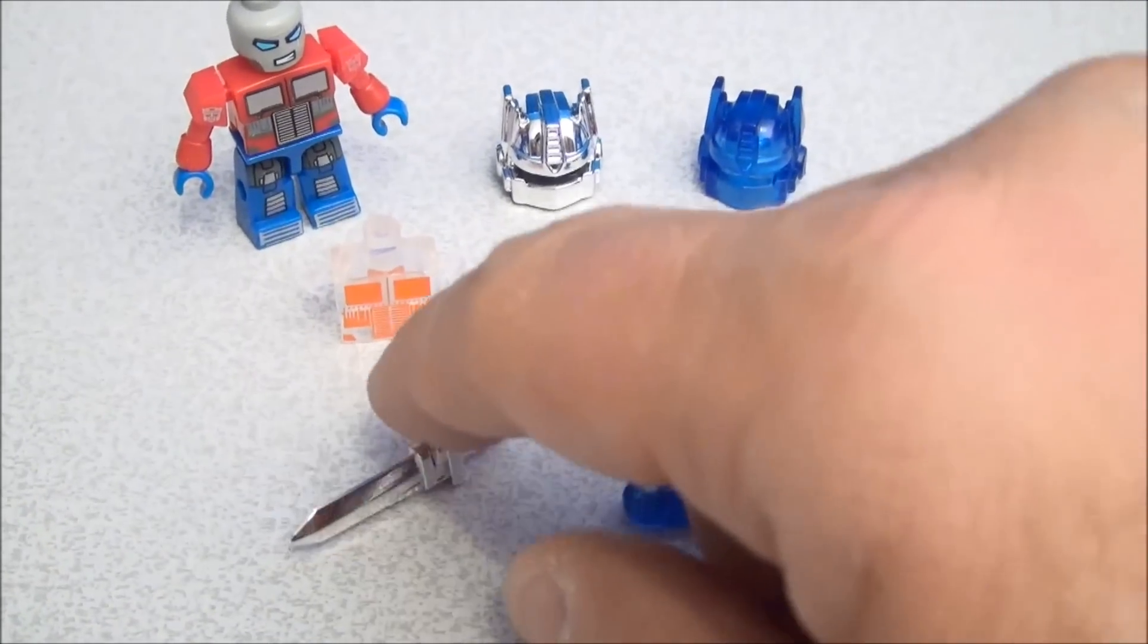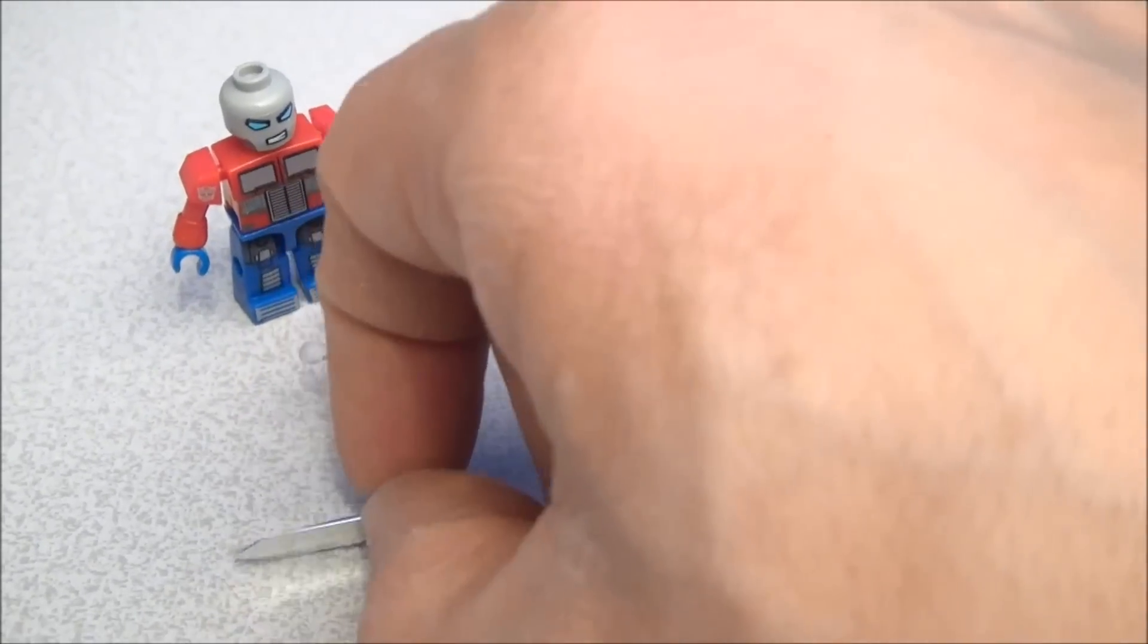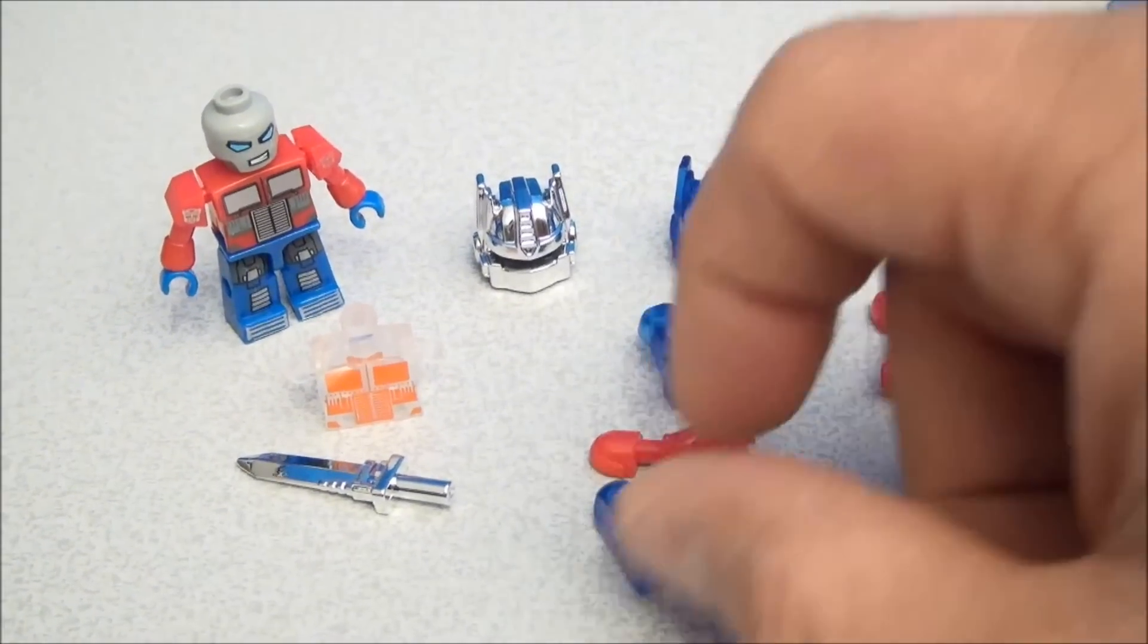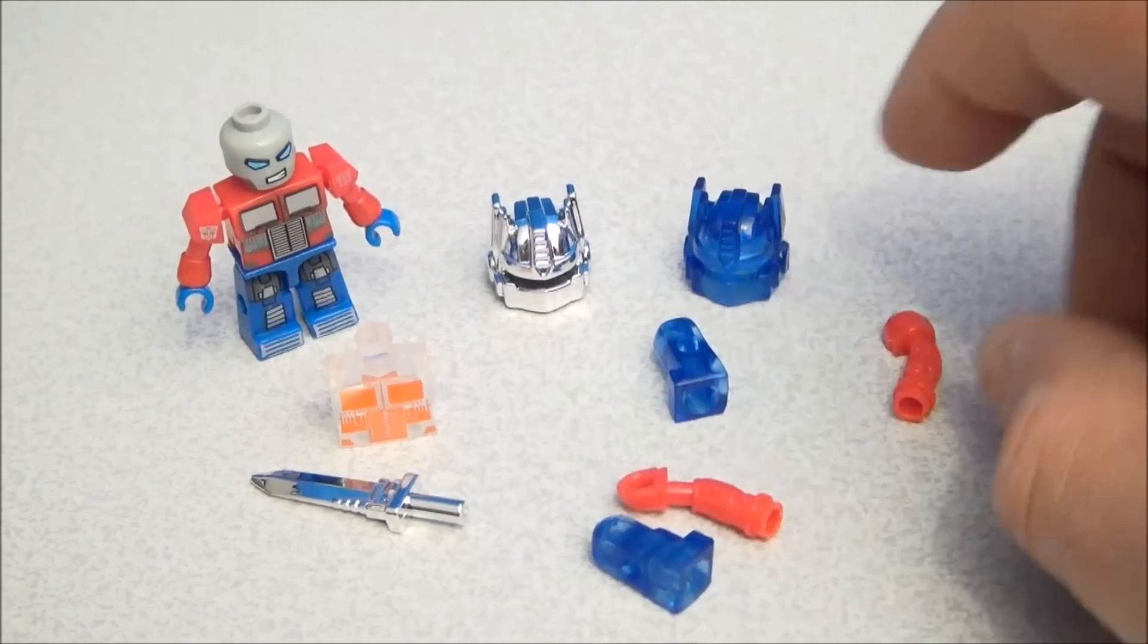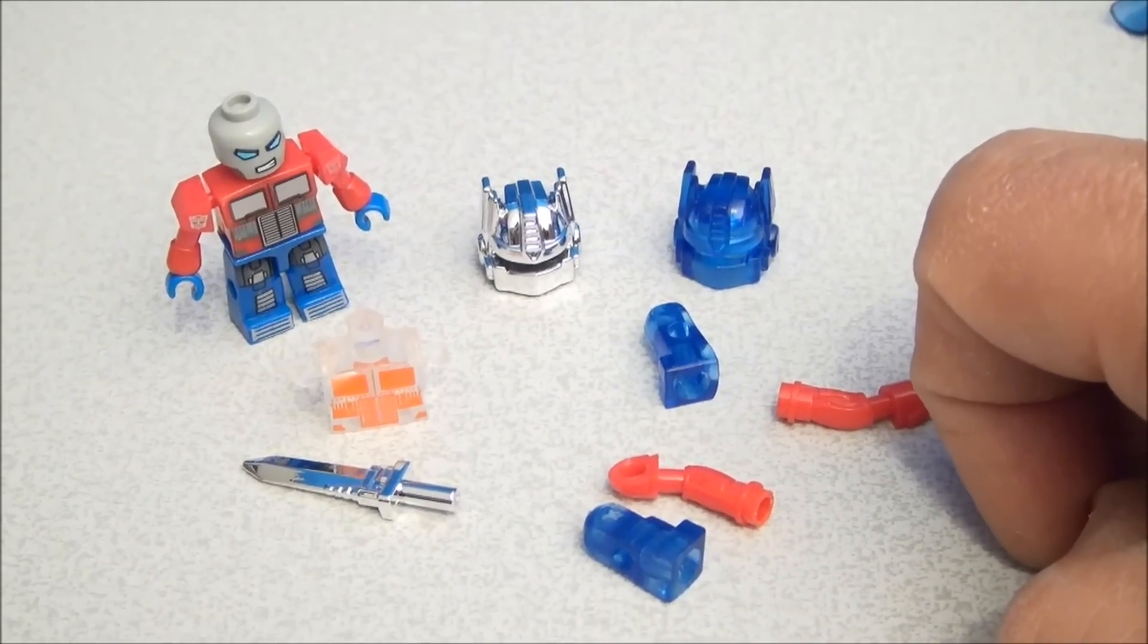It comes with a chrome sword too. Kind of nice, kind of cool. Even if you don't like the chrome helmet, that's fun to give to one of your other Kreons if you like. And some clear bit legs here and solid colored arms, but all fun stuff here. Let's go start building things.